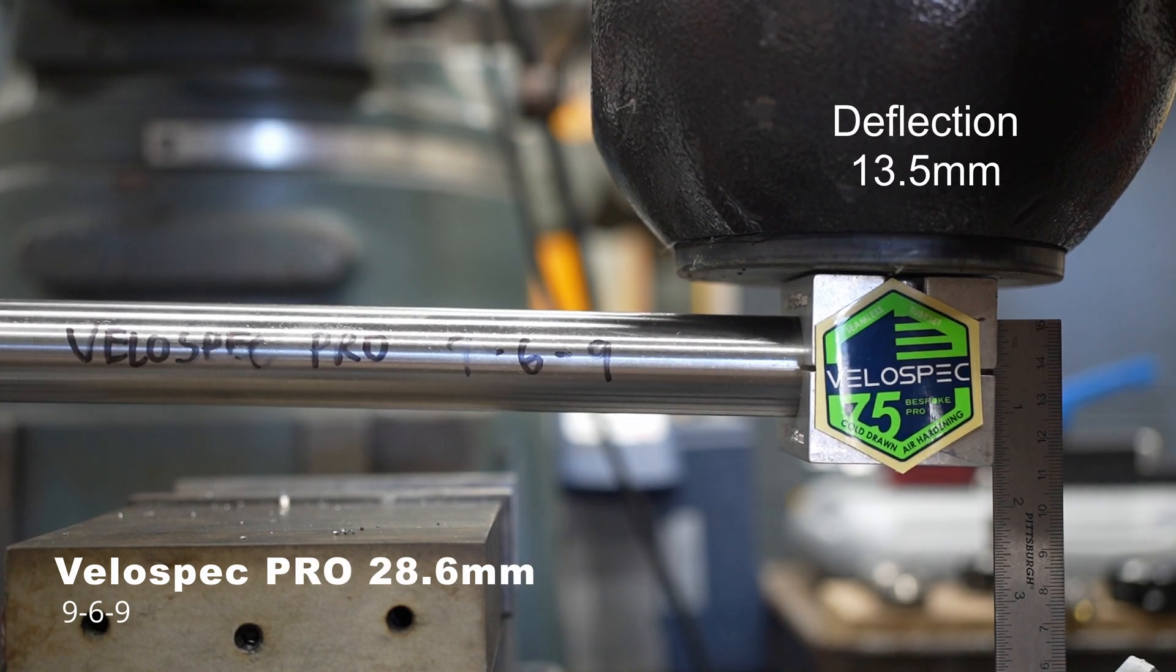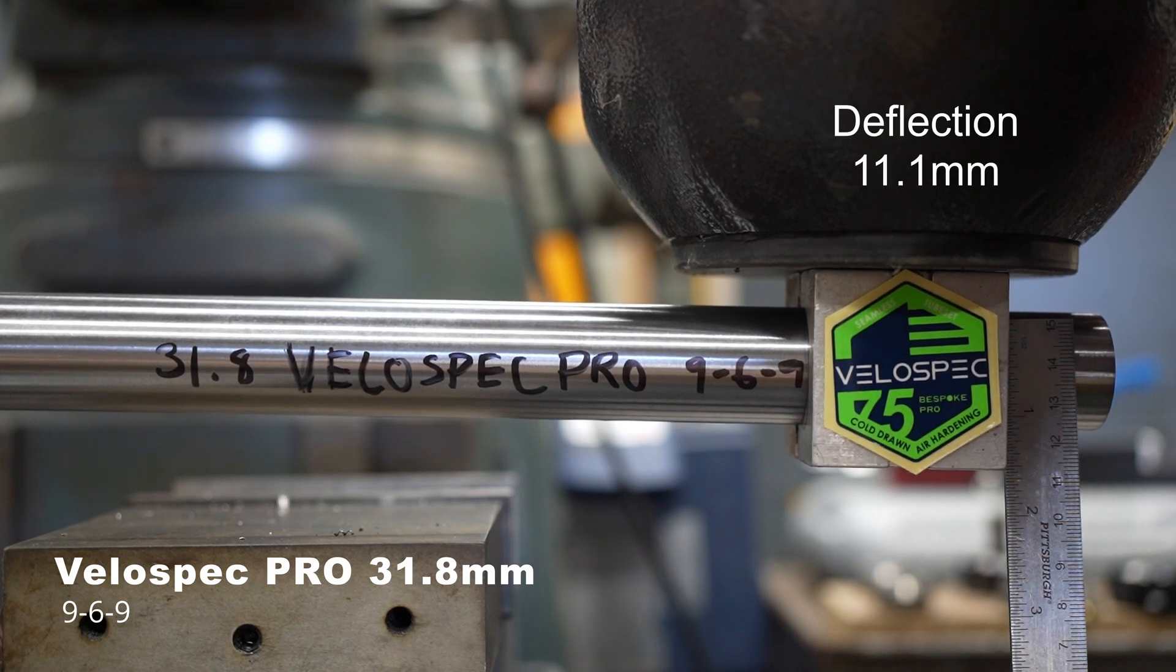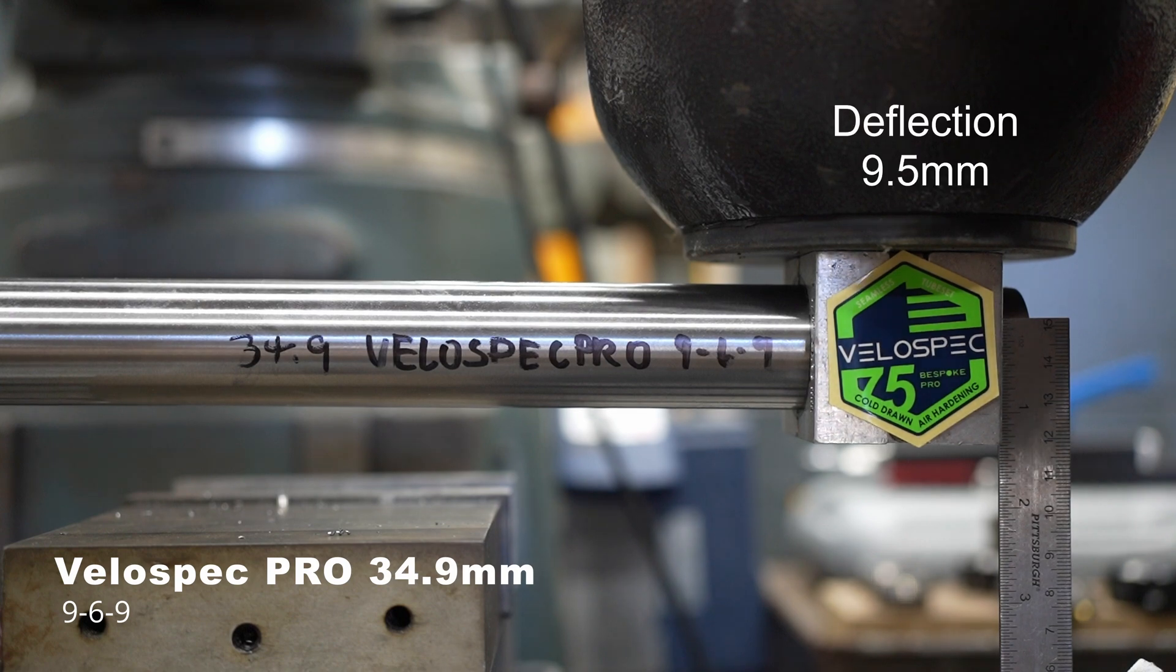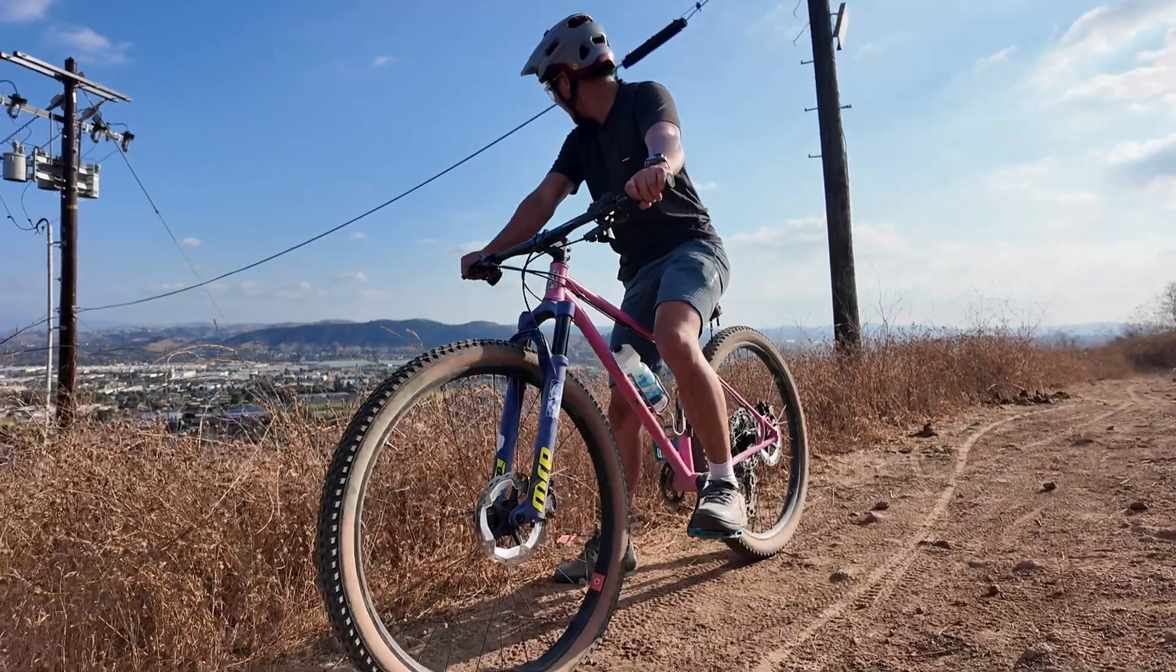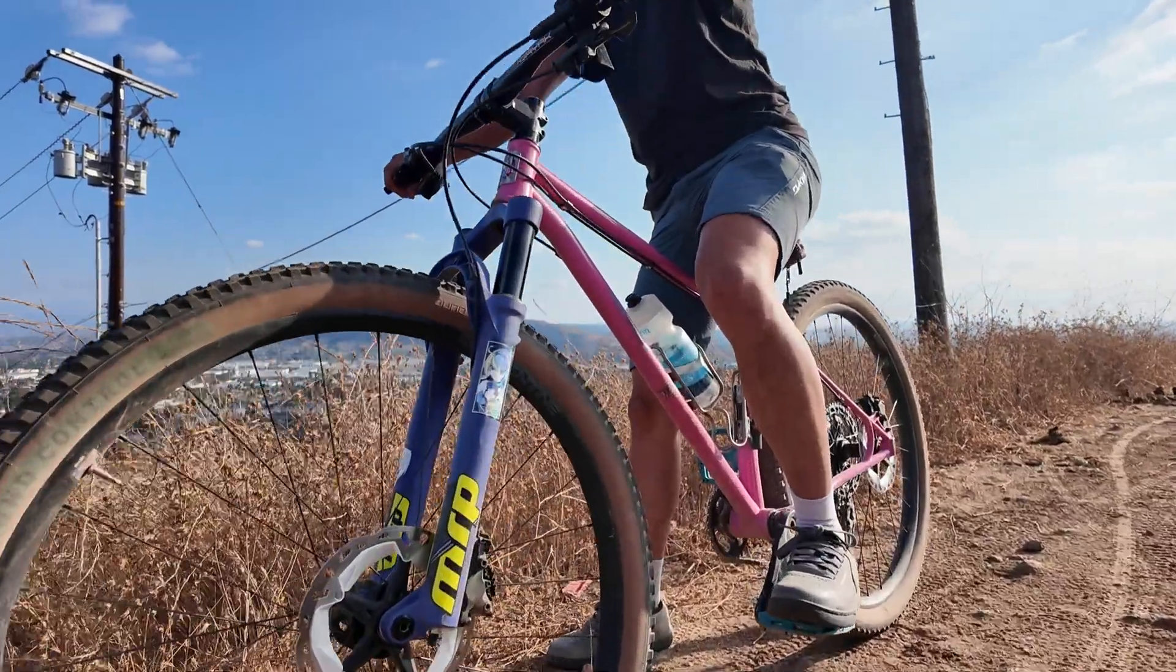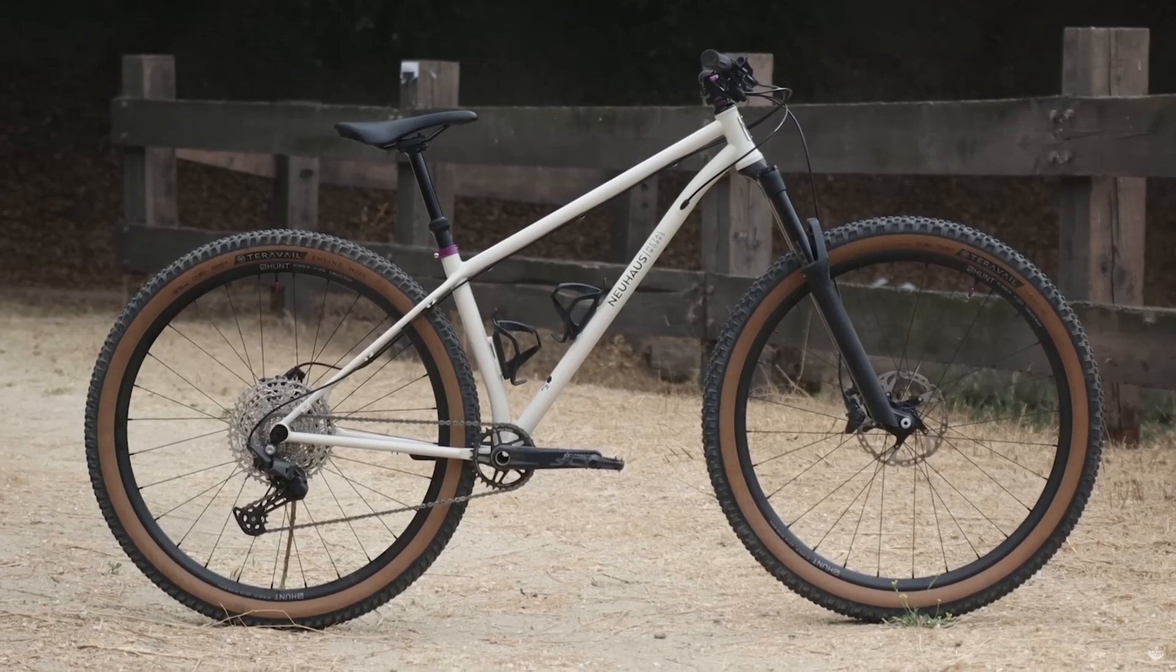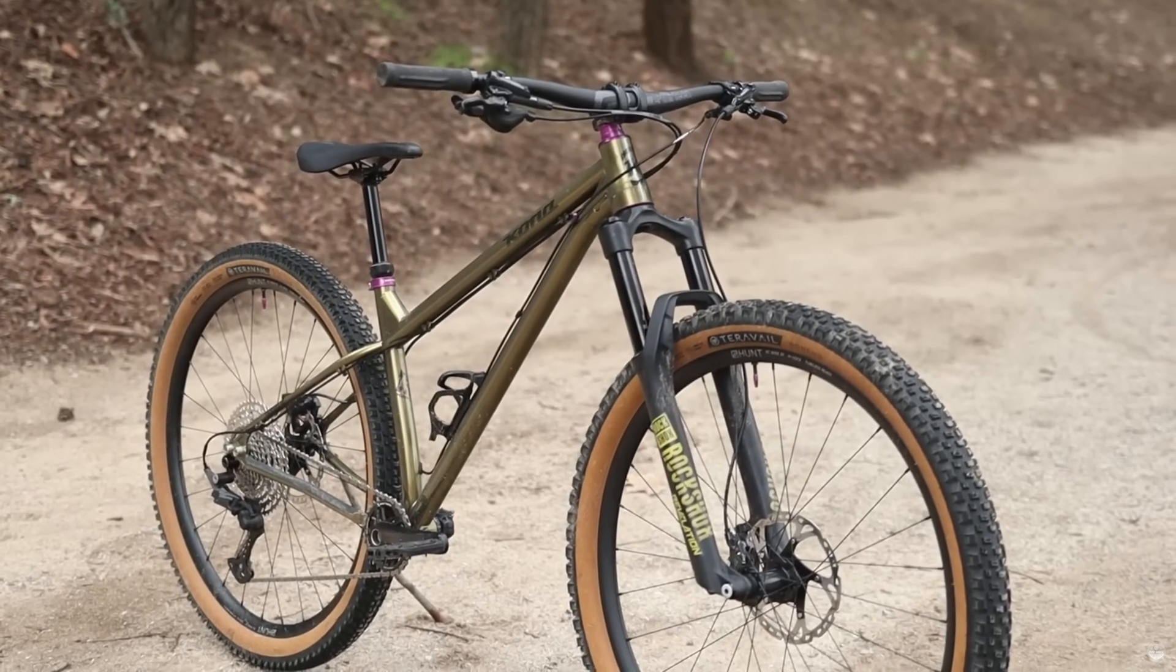Now let's compare three Velospec Elite tubes with the same butt thicknesses but different diameters. Each step up in diameter is roughly a 15% increase in stiffness. If you understand these principles, you can design strong, lightweight bikes with great ride quality. This is why when Nolan of Bikesauce tested our Newhouse Hummingbird, it was noticeably more compliant than a steel Hanzo it replaced.